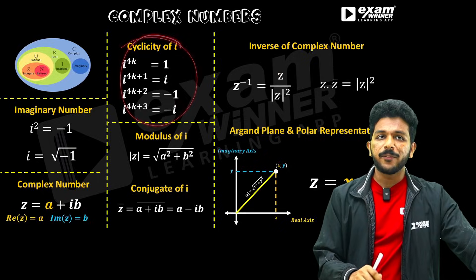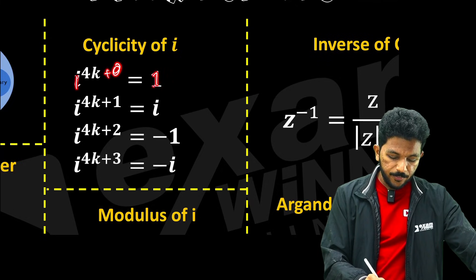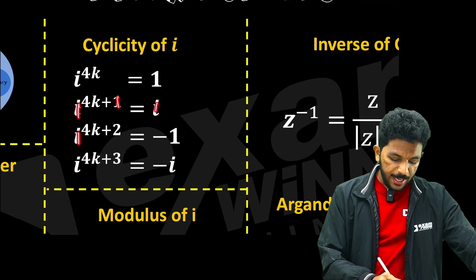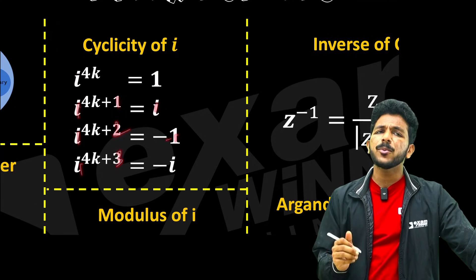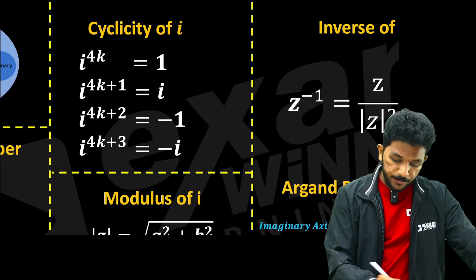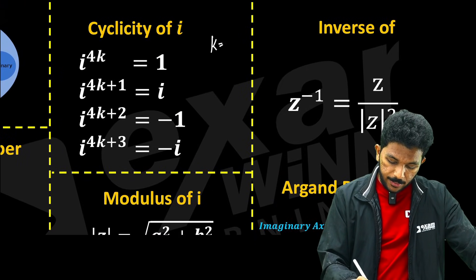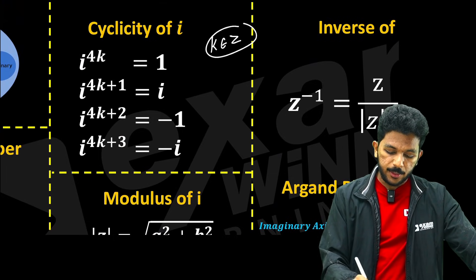Cyclicity of i is very simple. i raised to 0 is 1. i raised to 1 is i. i squared is minus 1. i cubed is minus i. For 4k where k belongs to integers, i raised to 4k is 1. Negative numbers follow the same pattern.